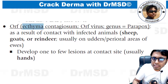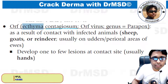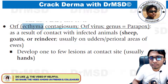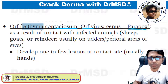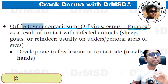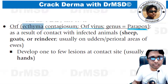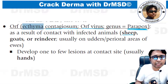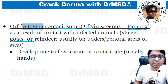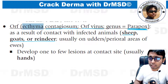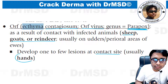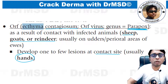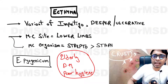Ecthema contagiosum is also taken from Rook's textbook. The ORF virus is a parapox virus that causes this condition called ecthema contagiosum, where due to frequent handling of animals like sheep, goats, and reindeer, there is transfer of these viruses and lesions develop at the contact site — usually the hands of animal handlers.